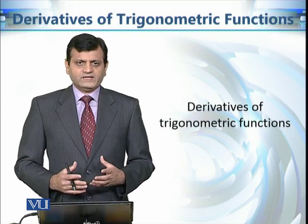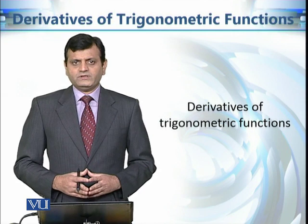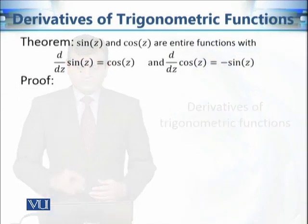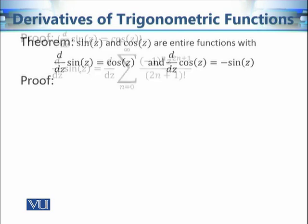At each step we will be comparing these derivatives with the real analysis case as well. Now let's begin with our first result. If we know the derivative of sine z and cosine z, then using the properties of the derivative that we have proved, we can easily calculate the derivatives of other trigonometric functions like tan z, cotangent z, secant z, and cosecant z. Now let's see how to prove, for example, that d/dz of sine z is equal to cosine z.